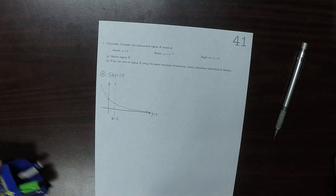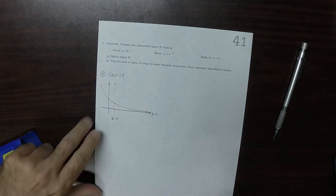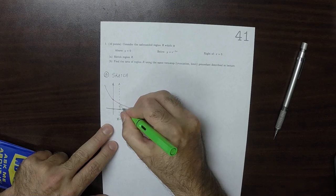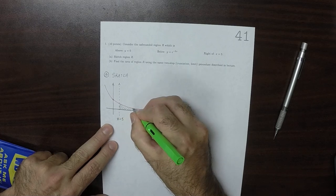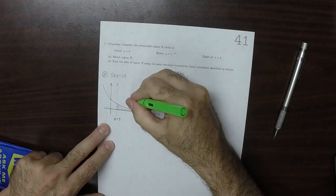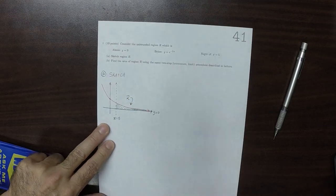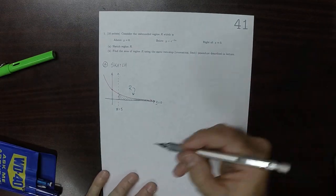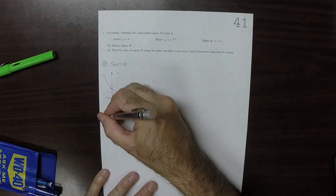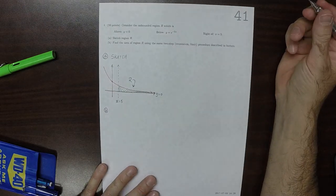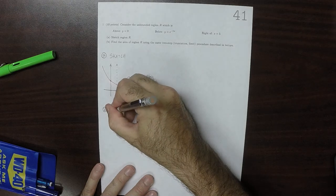So the region that's being requested is this entire unbounded region. OK, so part B, the way we're going to do it is we're going to consider the truncated region.